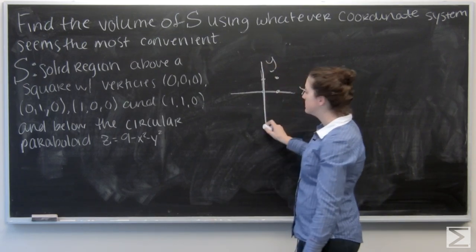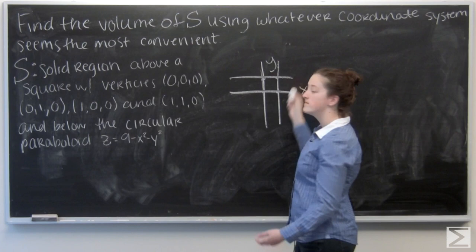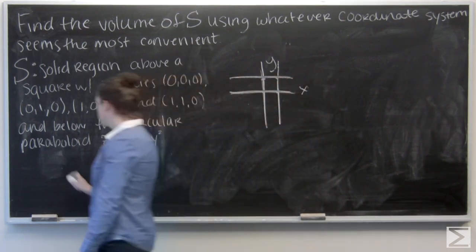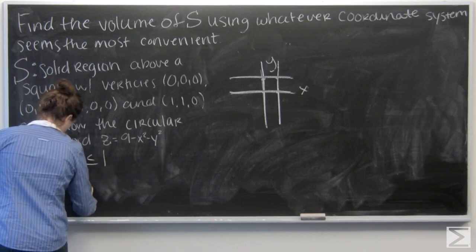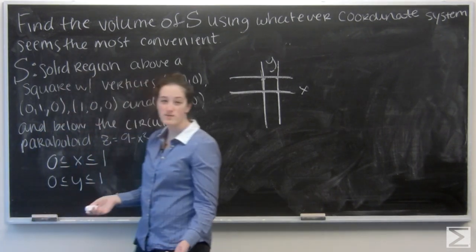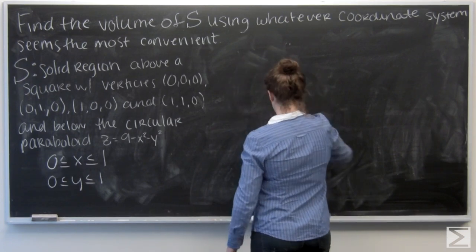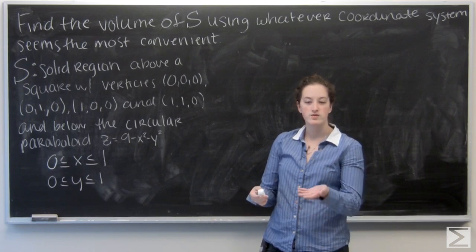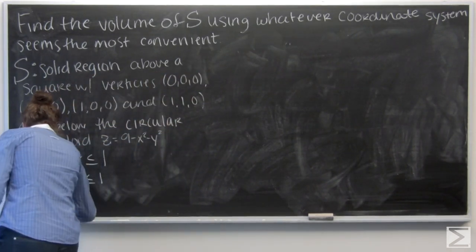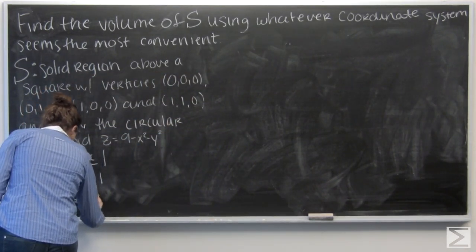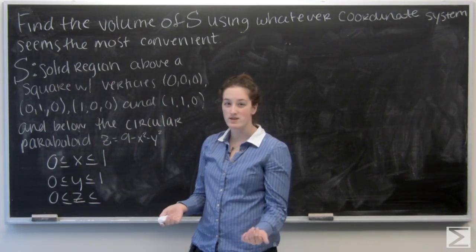I'm looking at x = 0, x = 1, y = 0, and y = 1. So I'm going to take x and y to both be between 0 and 1. Now we know this square is in the xy-plane, so our lower z-bound is 0, and the upper bound is that circular paraboloid. It's already in Cartesian coordinates, so I don't need to worry about changing anything.